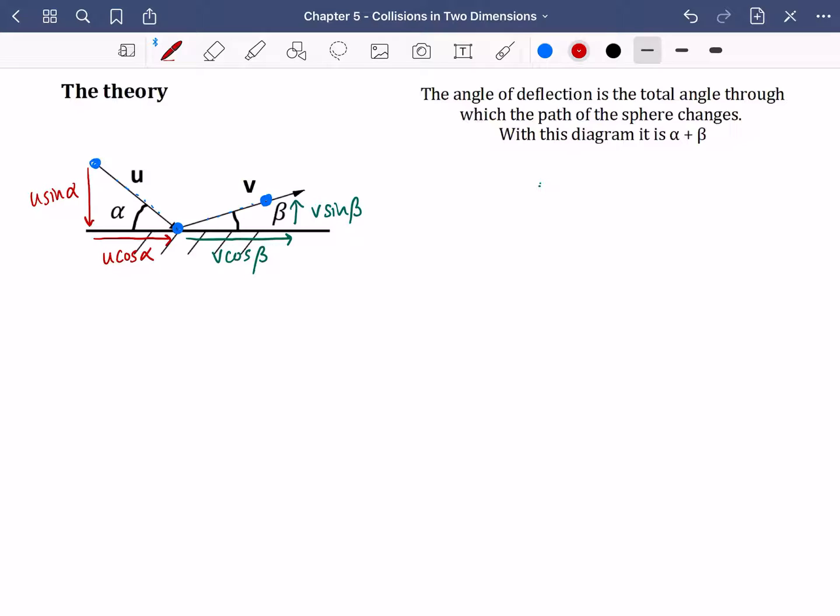Now we said some of these things earlier on, and we're going to say them again. We know that this one and this one remain unchanged because the wall can't do anything to those. All the wall can do is exert an impulse on the ball, and the impulse has got to be at 90 degrees. So our first statement we can write down is that v cos beta must be the same as u cos alpha.